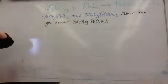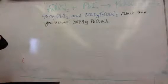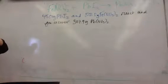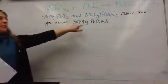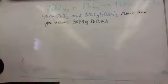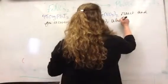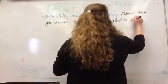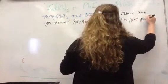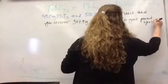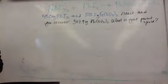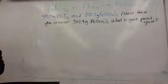So you put together 450 grams of lead-2 iodide and 500 grams of iron-2 nitrate, and out of that you get back 307.9 grams of lead-2 nitrate. Question is, what is your percent yield?